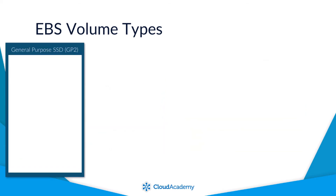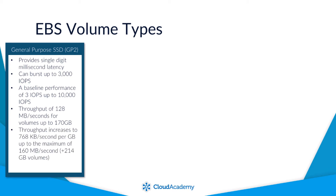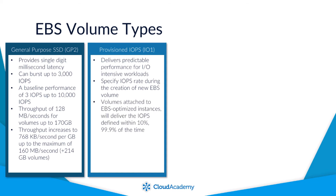The key points of the General Purpose SSD volume include: it provides single digit millisecond latency, it can burst up to 3,000 IOPS, it has a baseline performance of 3 IOPS up to 10,000 IOPS, and a throughput of 128 megabytes per second for volumes up to 170 GB. Above this, throughput increases by 768 kilobytes per second per gigabyte, up to a maximum of 160 megabytes per second. Provisioned IOPS SSD volumes deliver enhanced predictable performance for applications requiring IO intensive workloads. They also have the ability to specify the IOPS rate during the creation of a new EBS volume, and when attached to an EBS optimised instance, EBS will deliver the defined IOPS within 10%, 99.9% of the time throughout the year. The volumes range from 4 to 16 terabytes in size, with a maximum IOPS of 20,000 IOPS per volume.